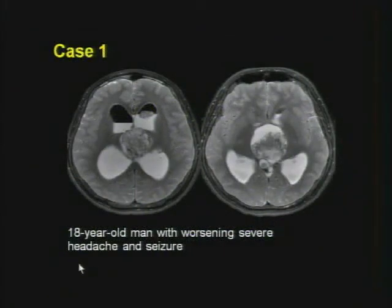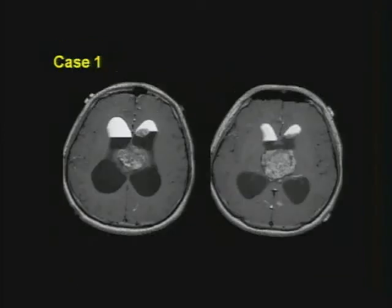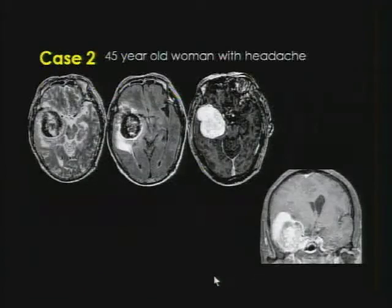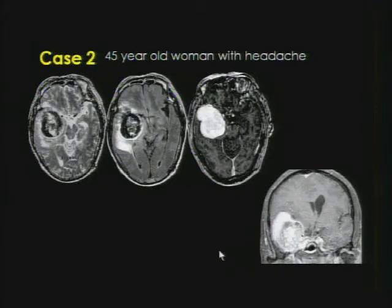This is a young man presenting with worsening severe headache and seizure. Here is T2-weighted imaging, T1 pre-contrast imaging, a sagittal localizer, and T1-weighted sagittal imaging. That was case one. Case two is a 45-year-old woman with headache — here are three sets of axials and a coronal post-gadolinium image.